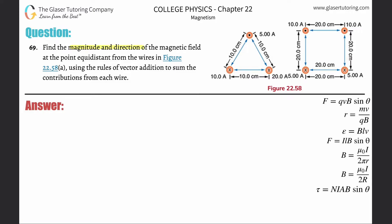Number 69. Find the magnitude and direction of the magnetic field at the point equidistant from the wires in figure 22.58 letter A using the vector addition. Please also review number 56. We talked about a very similar type of problem with directions of magnetic fields.